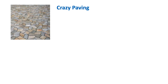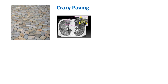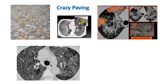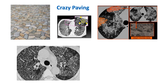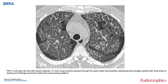Another finding: crazy paving pattern. It looks like irregular tiles on a footpath put together. In CT we see similar findings — superimposed interlobular septal thickening on ground glass opacities. One image shows air bronchogram within ground glass opacity lesions — the dense white is consolidation and the slightly hazy part is ground glass opacity. Another patient shows multilobe infiltrates with widespread ground glass opacities, focal areas of sparing, and prominent septal lines — this is the crazy paving pattern.